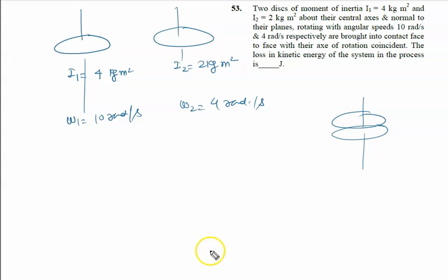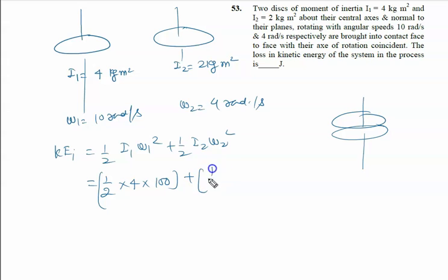The loss in kinetic energy in the process: First, we calculate the initial kinetic energy. KE_initial = ½I₁ω₁² + ½I₂ω₂². So it is ½(4)(10)² + ½(2)(4)². That's ½(4)(100) + ½(2)(16) = 200 + 16 = 216 joules.